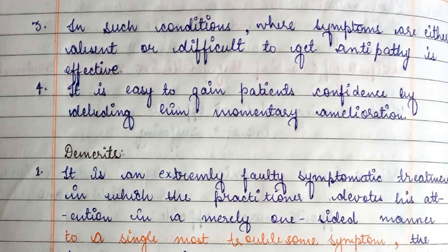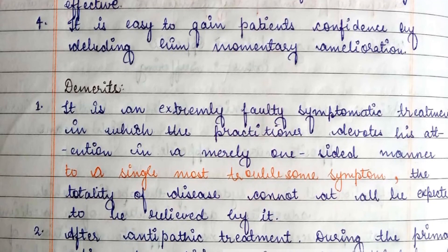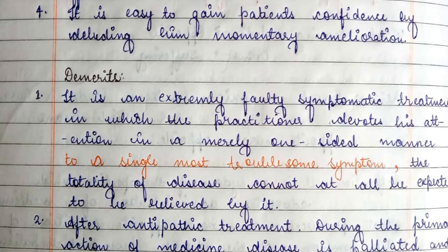Now the demerits: Antipathy is an extremely faulty symptomatic treatment in which the practitioner devotes attention in a merely one-sided manner to a single most troublesome symptom. The totality of disease cannot at all be expected to be relieved by it. The physician only palliates and suppresses symptoms; they never address the full portrait of disease and the patient does not get permanent relief or restoration of health.